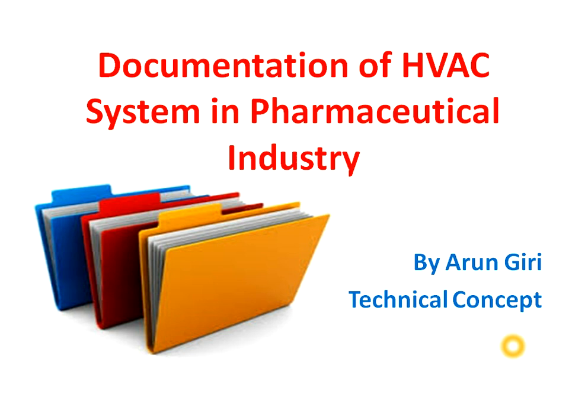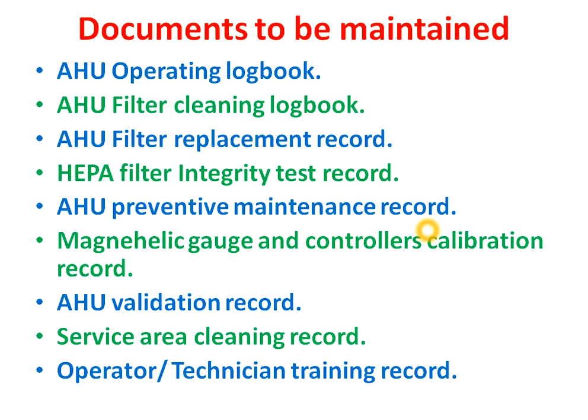So now we will see which documents we have to maintain for the HVAC system. The first document is the AHU operating logbook. In this logbook we maintain operating instructions like the start time of the HVAC system, pressure differential reading, who operated the HVAC system, and the starting time. This is a daily-based operating logbook.